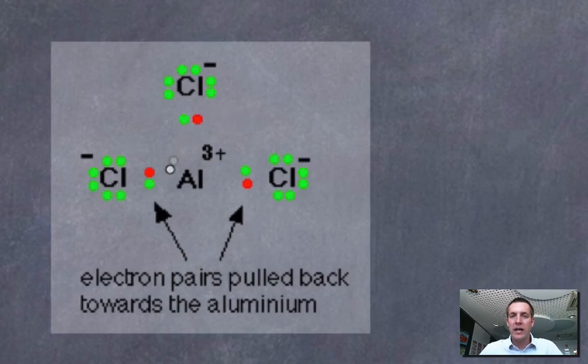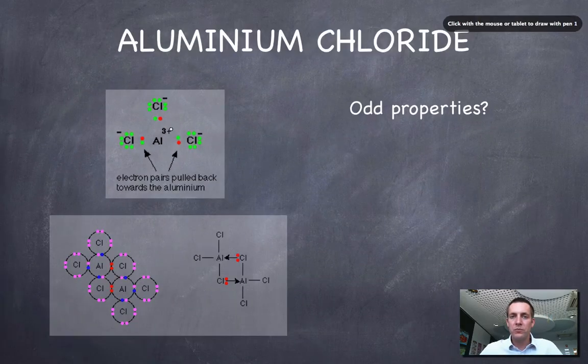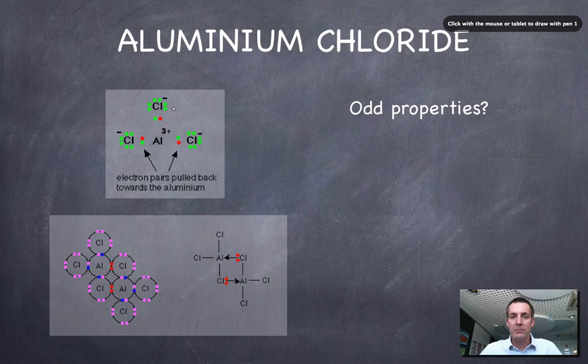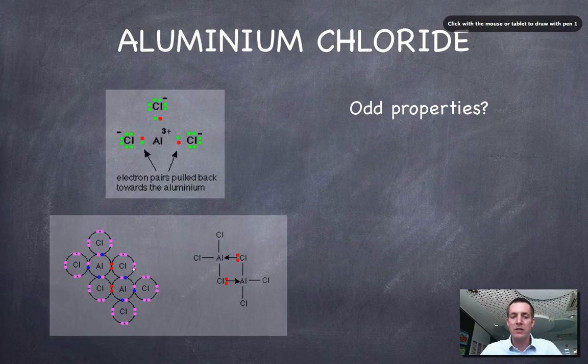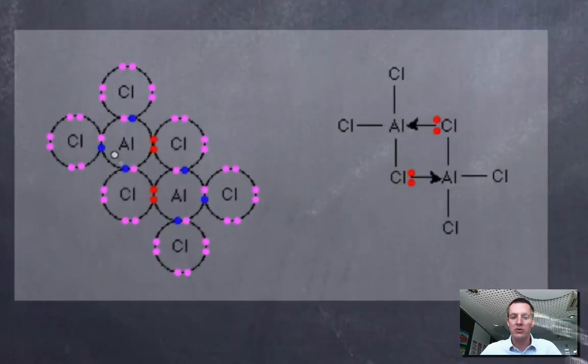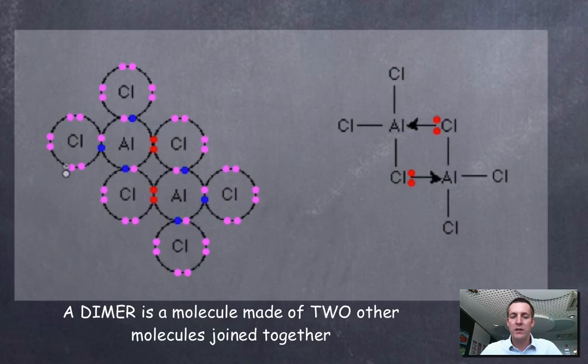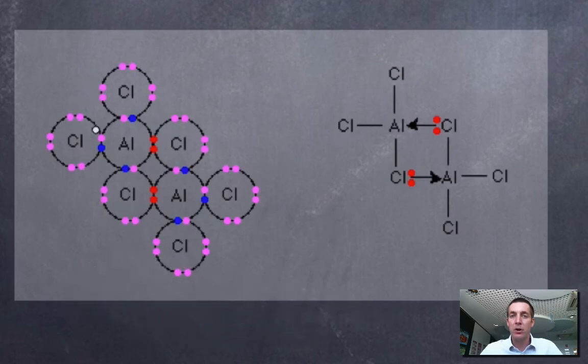And what actually happens when we melt aluminium chloride is that it forms this dimer structure where two of these AlCl3 molecules basically join together to make this Al2Cl6 molecule, where we've got these dative covalent bonds from the chlorine atoms to the aluminium atoms.